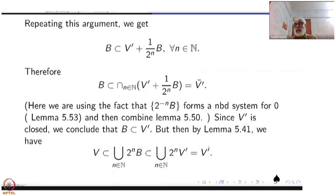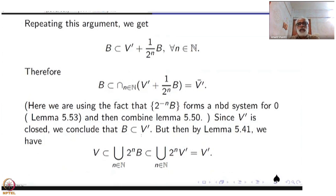To summarize: we started with V, produced finitely many elements with certain properties, took their linear span V', and showed that V = V'. Therefore V is finite-dimensional, under the assumptions that V is Hausdorff and locally compact.